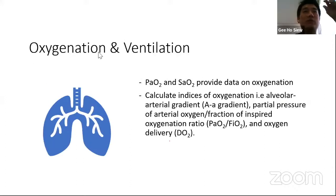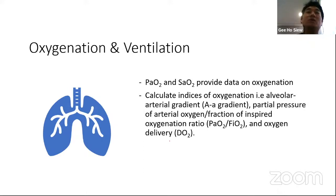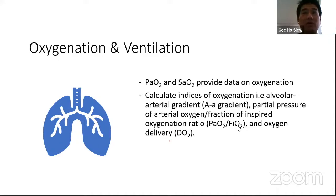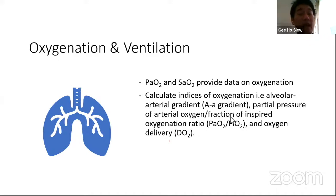For oxygenation, we need to know how well the patient's partial arterial oxygen concentration is. From ABG we get PaO2 and SaO2. We also calculate the alveolar-arterial gradient and the PF ratio — PaO2 divided by FiO2. For example, a PaO2 of 80 is not adequate if the patient is receiving FiO2 of 1.0 — it only shows the patient is worsening with hypoxia. This ratio is very important to guide us in managing these patients.